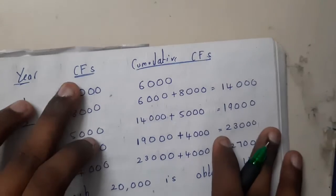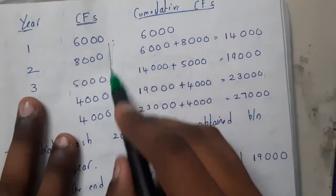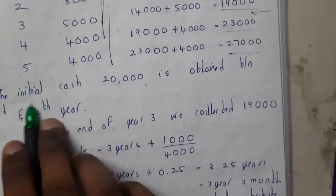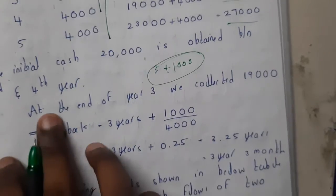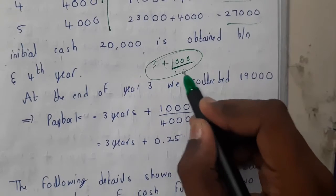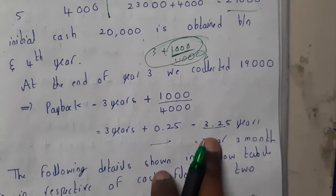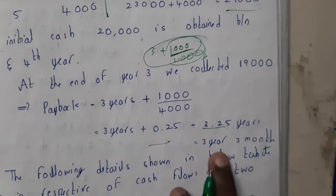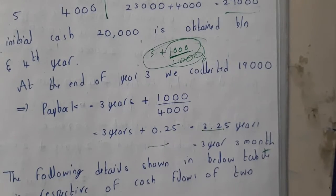We write a table with years one through five, cash inflows, and cumulative cash inflows. The investment of twenty thousand falls between Year 3 (cumulative nineteen thousand) and Year 4. The remaining amount needed is one thousand, and Year 4 inflow is four thousand. So: Payback Period = 3 + (1,000 / 4,000) = 3 + 0.25 = 3.25 years, which equals three years and three months.